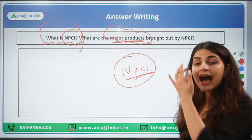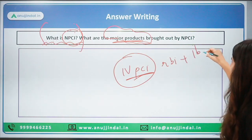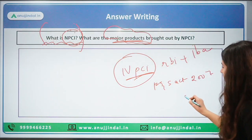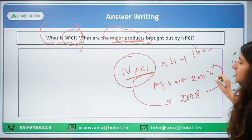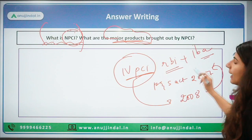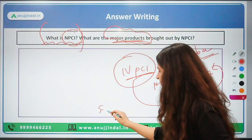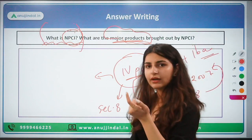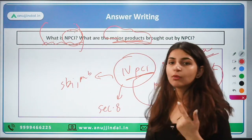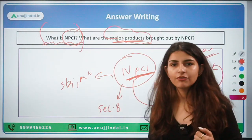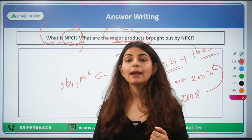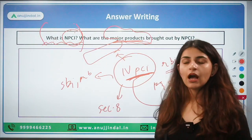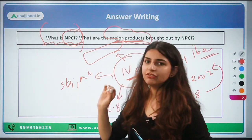We all know what NPCI does — it works towards the payment and settlement system. RBI brought out NPCI along with IBA under the Payment and Settlement System Act 2007, in 2008. It is a Section 8 company. Initially there were 10 central banks working as promoters — for example, SBI and PNB. The purpose of NPCI is to work towards payment and settlement mechanisms and bring innovations using technology.